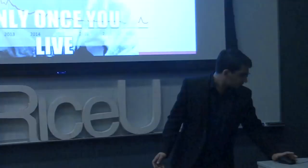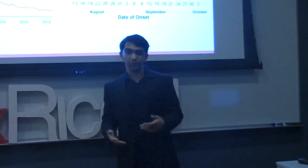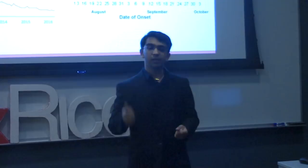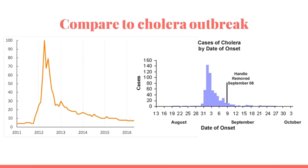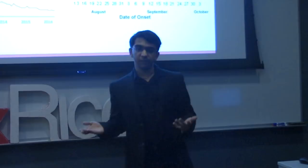We can use our metaphor of memes as viruses to better understand how this works. Next to the graph from the last slide, I have a picture of an epidemic curve. In many ways, you can see that these graphs are almost identical — the same kind of start of low activity, sudden exponential growth, and then a slow decay over time. What this shows us is that memes spread in a very similar fashion to viruses and diseases.